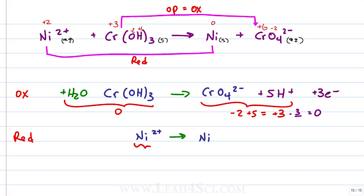For reduction, we have +2 goes to 0. How do we bring +2 down to 0? +2 - 2 equals 0, so we add +2 electrons to the reactant side.